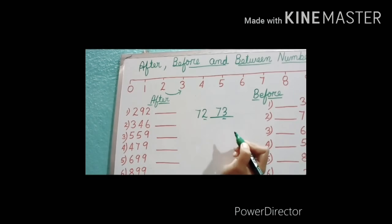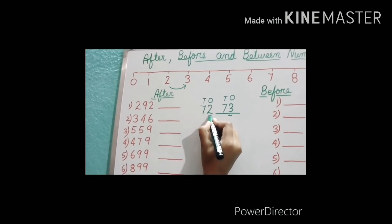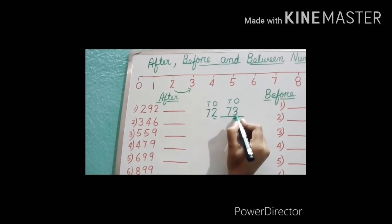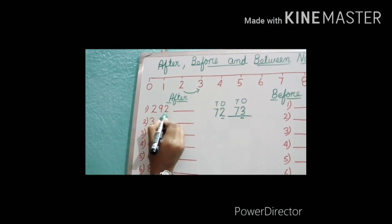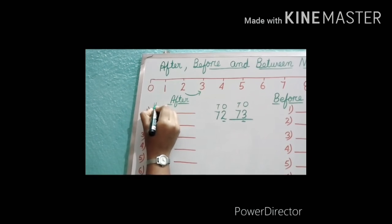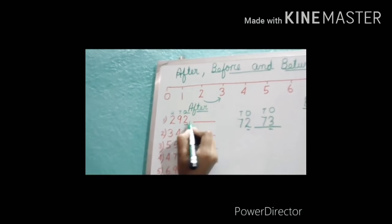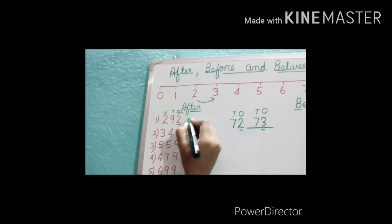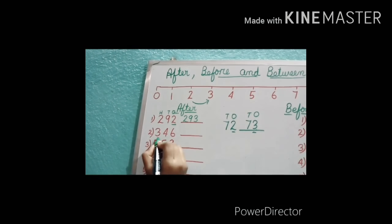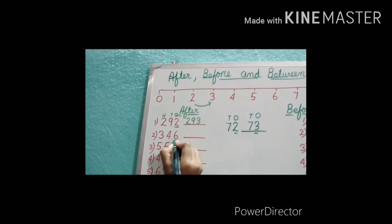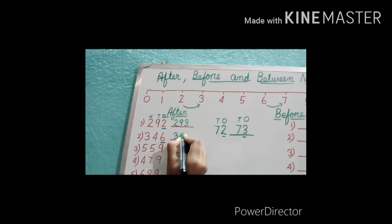We have changed the ones place. In the ones place of 72 the digit is 2, and for the after number we wrote 3. So like this, all answers we will do. First question: 292. Ones place digit is 2; after 2 the next digit is 3. So we will only change the ones place digit — that gives 293. Next question: 346. Ones place digit is 6; after 6 the digit is 7. So the answer is 347.